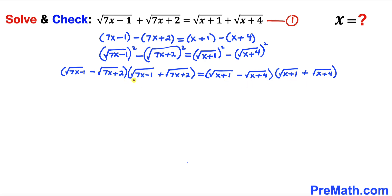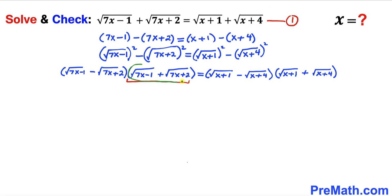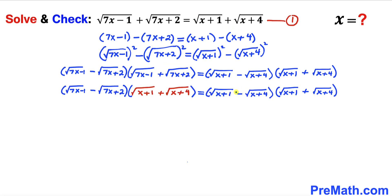Now let's focus on the factor (√(7x minus 1) plus √(7x plus 2)). Recalling equation number 1, this expression equals (√(x plus 1) plus √(x plus 4)). So we replace that factor with the right-hand side of equation 1, giving us (√(7x minus 1) minus √(7x plus 2)) times (√(x plus 1) plus √(x plus 4)) on the left-hand side.